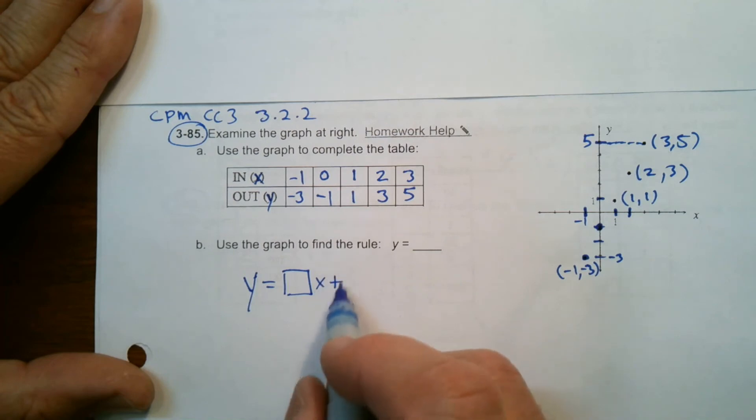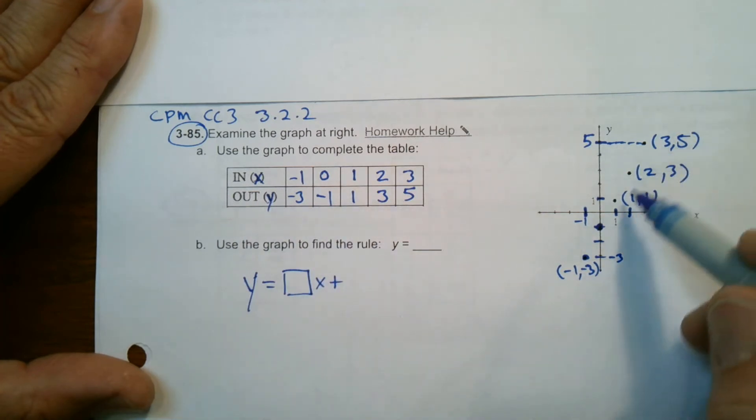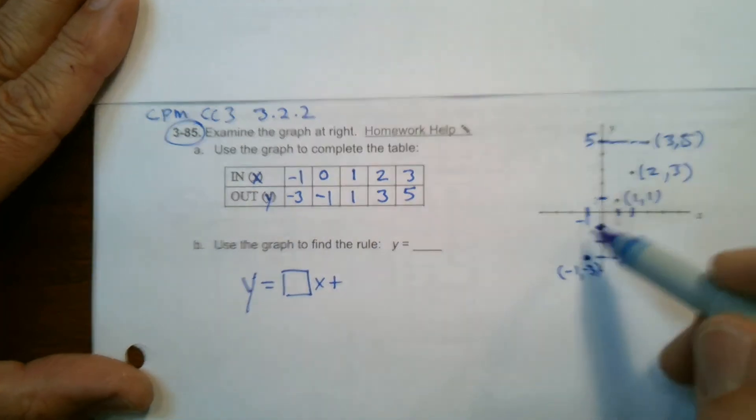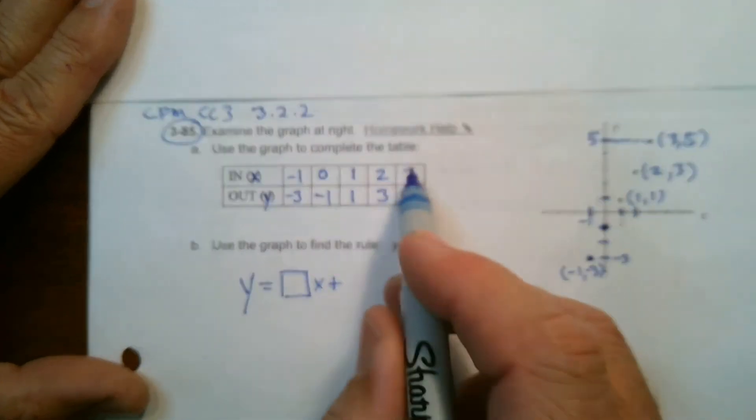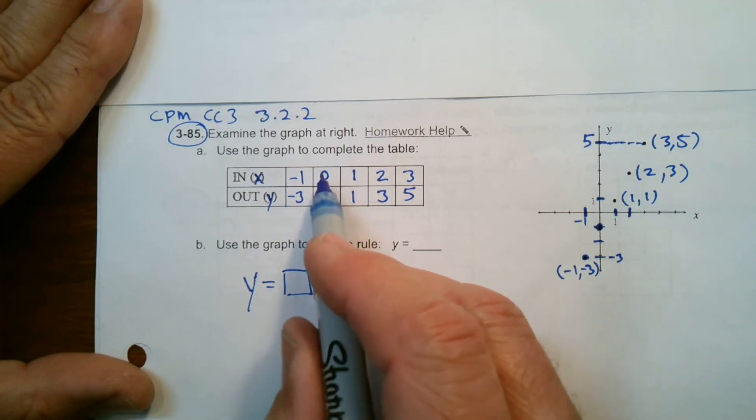Sometimes we have a squared, an X squared, or where you multiply by itself. But in this case, because it's in this linear pattern, I know pretty much my rule is going to have that type of a look. So we look to see what we have.